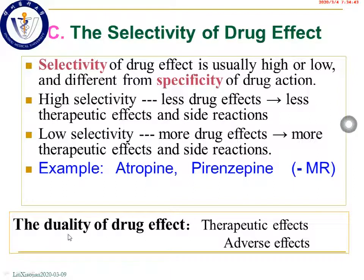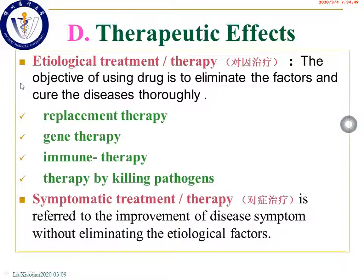Because drugs induce both therapeutic effects and adverse effects, there is duality of drug effects. Based on therapeutic effects, drug therapy can be divided into etiological therapy or symptomatic therapy. Etiological treatment means the objective is to eliminate the causative factors and cure the disease thoroughly. Examples include replacement therapy, gene therapy, immune therapy, and therapy by killing pathogens.